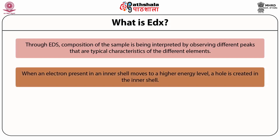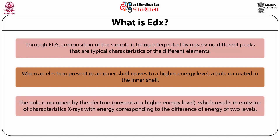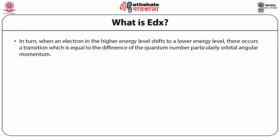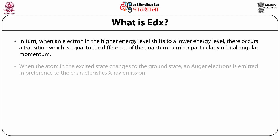When an electron present in an inner shell moves to a higher energy level, a hole is created in the inner shell. The hole is occupied by an electron from the higher energy level, resulting in emission of characteristic x-rays with energy corresponding to the difference between the two energy levels. When an electron in the higher energy level shifts to a lower energy level, there occurs a transition equal to the difference of the quantum number, particularly orbital angular momentum. When the atom in the excited state returns to the ground state, an Auger electron may be emitted in preference to the characteristic x-ray emission.